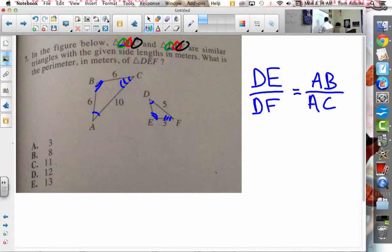So what's DE? I don't know. It's just DE, right? What's DF? Well, we know that that measure is 5. What's AB? 6. What is AC? 10.